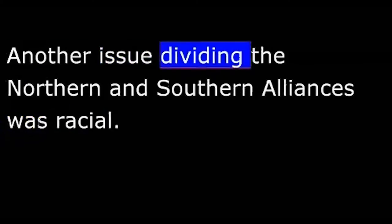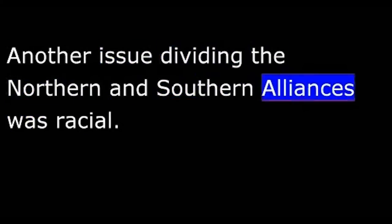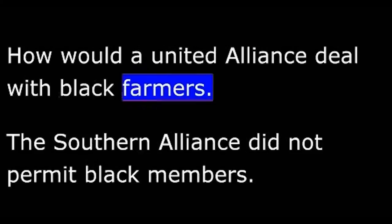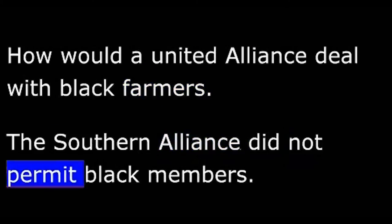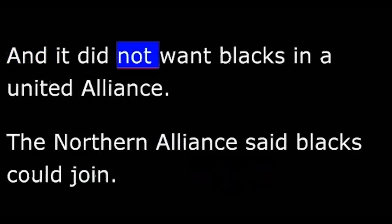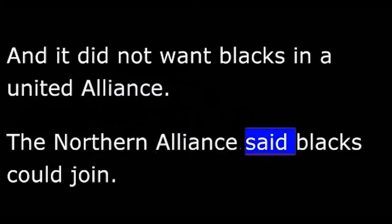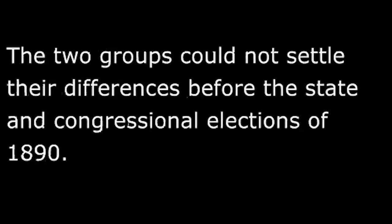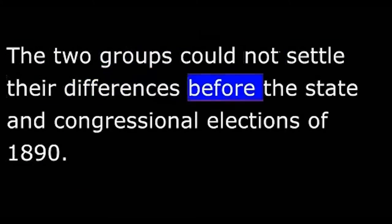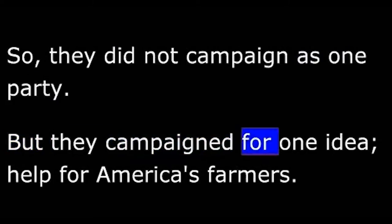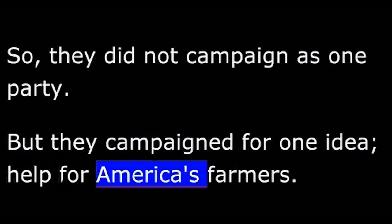Another issue dividing the Northern and Southern alliances was racial. How would a united alliance deal with black farmers? The Southern alliance did not permit black members and did not want blacks in a united alliance. The Northern alliance said blacks could join. The two groups could not settle their differences before the state and congressional elections of 1890. So they did not campaign as one party, but they campaigned for one idea: Help for America's farmers.